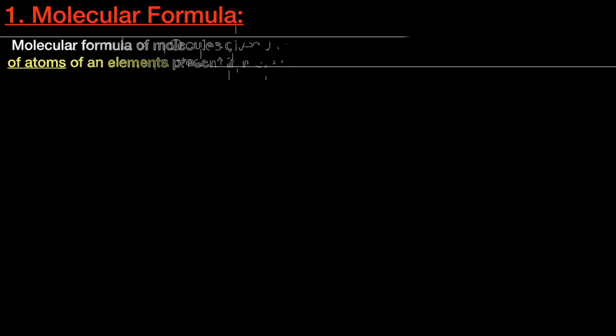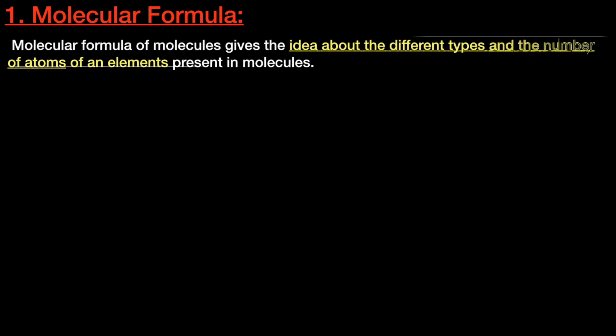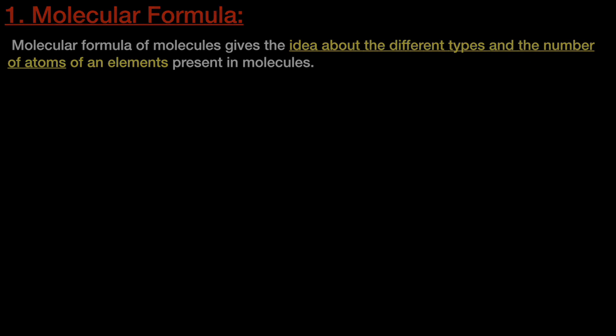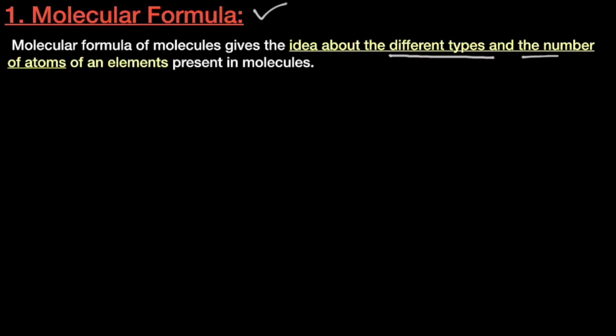First is the representation by molecular formula. The molecular formula of a molecule gives the idea about the different types and the number of atoms of each element present in a molecule.